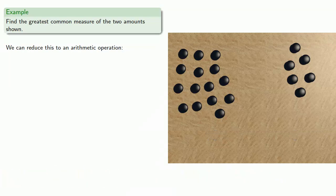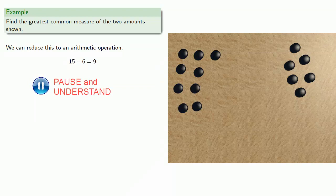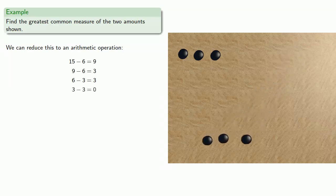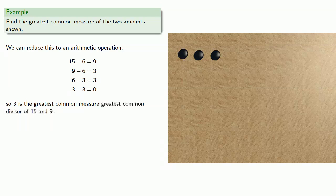We subtract the smaller from the larger: 15 minus 6 gets us 9. We subtract the smaller from the larger: 9 minus 6 gets us 3. We subtract the smaller from the larger: 6 minus 3 gets us 3. And one final subtraction: 3 minus 3 gets us 0. And so 3 is the greatest common measure — or, since we've been working with numbers, we also call this the greatest common divisor of our original numbers 15 and 6.